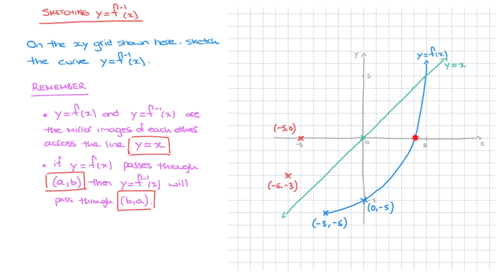The next point I pick up on is where the blue curve crosses the x-axis. Looking at this, we can see it crosses the x-axis when x equals 4, so that's the point with coordinates 4, 0. The inverse function will therefore pass through the point with coordinates 0, 4 — which is on the y-axis, right here. I'll label that: that's 0, 4.